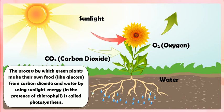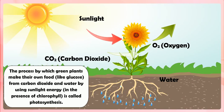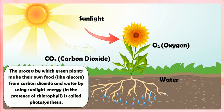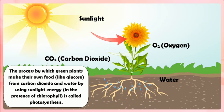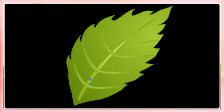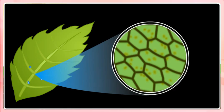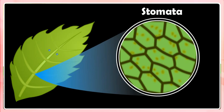Photosynthesis is the process by which green plants make their own food like glucose from carbon dioxide and water by using sunlight energy in the presence of chlorophyll. In this process, the plants take carbon dioxide gas needed for photosynthesis from the air through the tiny pores called stomata present on the surface of leaves.